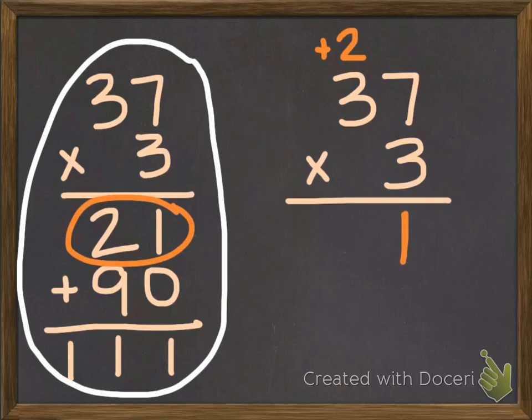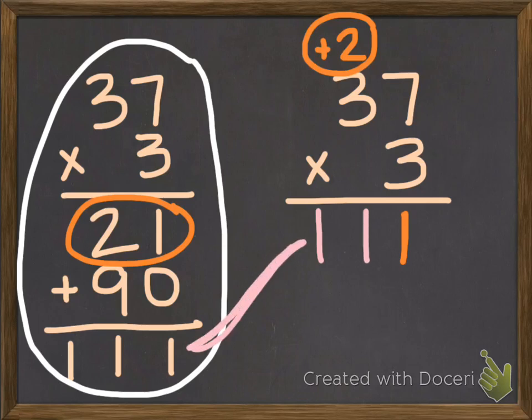The next step is to multiply the digit in the tens place. So 3 times 3 is 9, but I still must add 2 more. 9 plus 2 is 11. As you can see, my answers match each other. I still get the same product.